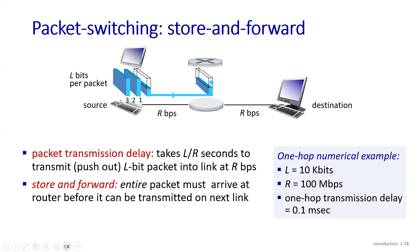In packet switching, routers store and then forward the packet. This means that until the router receives all the bits of the packet, it is not going to process or forward it. This is logical because a packet contains data, header values, and IP addresses in the headers — so unless all the bits arrive, the router cannot process the packet.